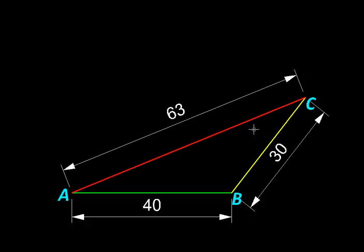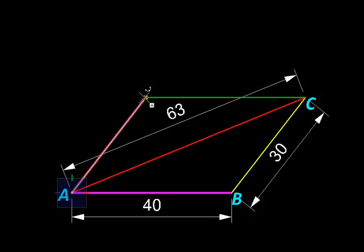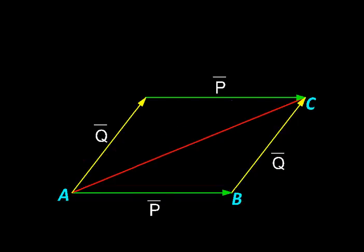Next we will take a look at one of the important properties of vector addition. Suppose we start from the same point A, but instead of going along this green displacement first and then undergoing this yellow displacement, let us switch their order. So we first get displaced along this yellow vector, walk like this 30 steps, and then walk 40 steps in this direction. So we have reversed the order of these two displacements. Instead of green and then yellow, we are going yellow and then green. But notice we are reaching the same point.